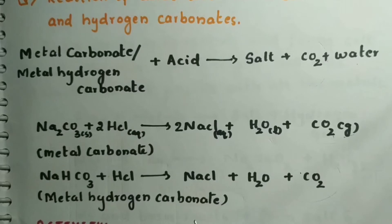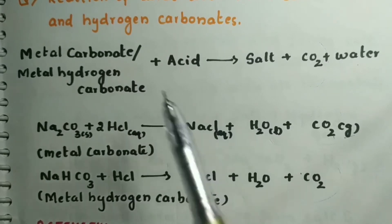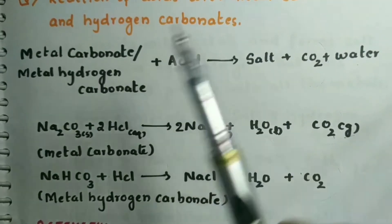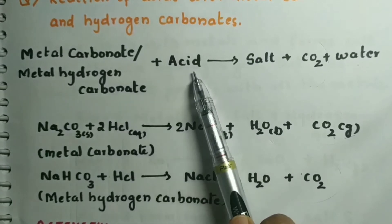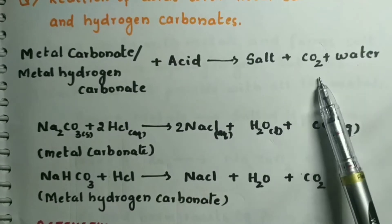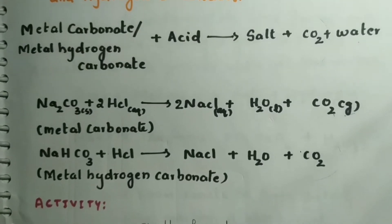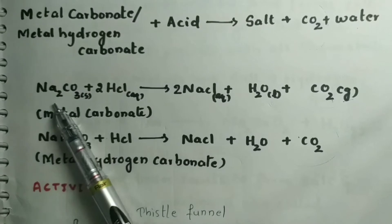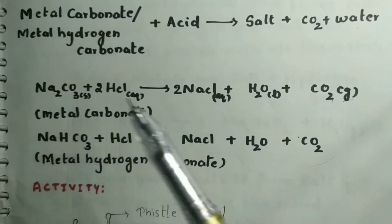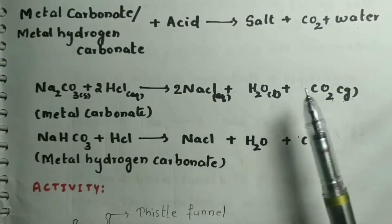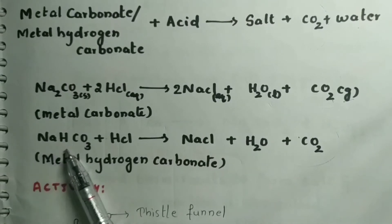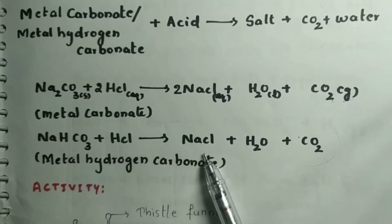The last chemical property of acids is the reaction with metal carbonates and metal hydrogen carbonates. Metal carbonates or metal hydrogen carbonates react with acid to form salt, carbon dioxide and water. For example, sodium carbonate reacts with hydrochloric acid to form sodium chloride, water and CO2. Similarly, sodium hydrogen carbonate reacts with HCl to form NaCl, water and carbon dioxide.